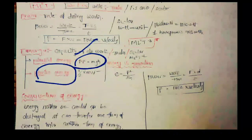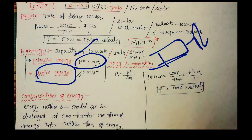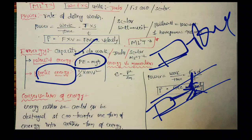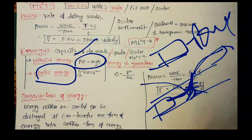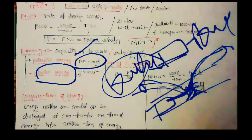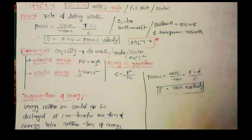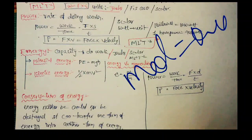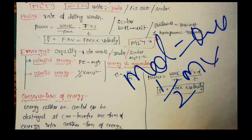Next is kinetic energy. Kinetic energy is the energy of motion. For example, if you are on a road and a vehicle is moving, it has kinetic energy. Every motion has kinetic energy. The formula is KE = ½ mv².